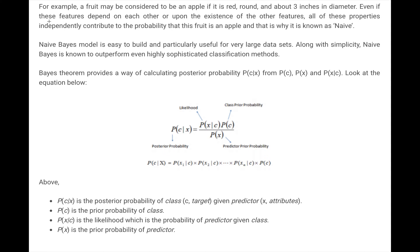That is what is called 'naive.' If you take an apple, it has a red color, it is round, and it has about three inches in diameter. All these properties independently contribute to the probability that this fruit is an apple. Those features independently contribute — they do not have any connection with the existence of other features. One feature being red independently contributes to the final goal; the round shape also independently contributes to the final goal. That is called naive.